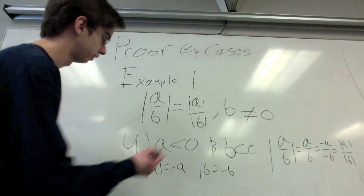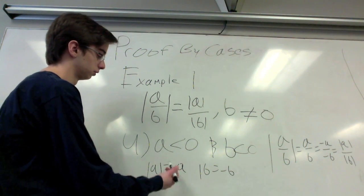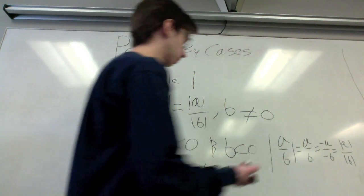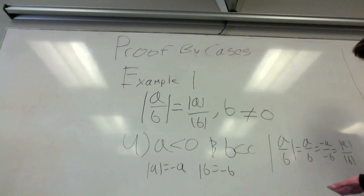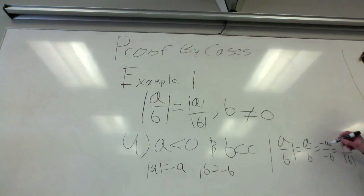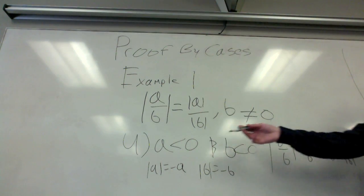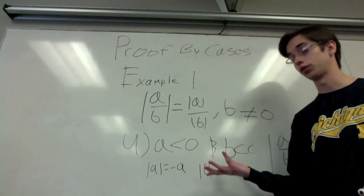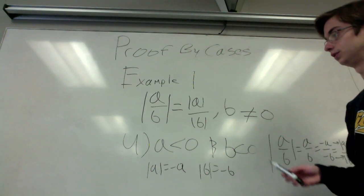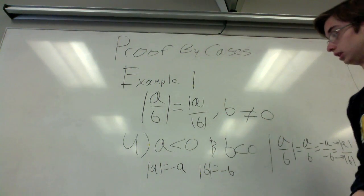For the fourth case, both A and B are less than zero. Because of the double negative, the absolute value of A equals negative A and the absolute value of B equals negative B. Starting with the premise, A over B equals negative A over negative B, since negative divided by negative is positive. Substituting back, the absolute value of B equals negative B and the absolute value of A equals negative A, proving it again. After all four cases, we've proven that the absolute value of A over B equals the absolute value of A over the absolute value of B when B is not equal to zero.